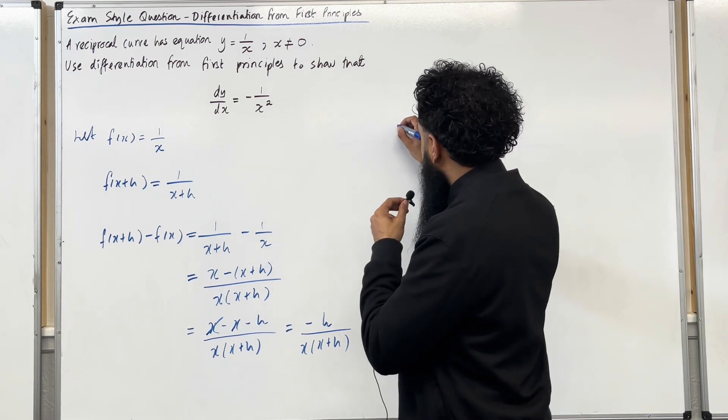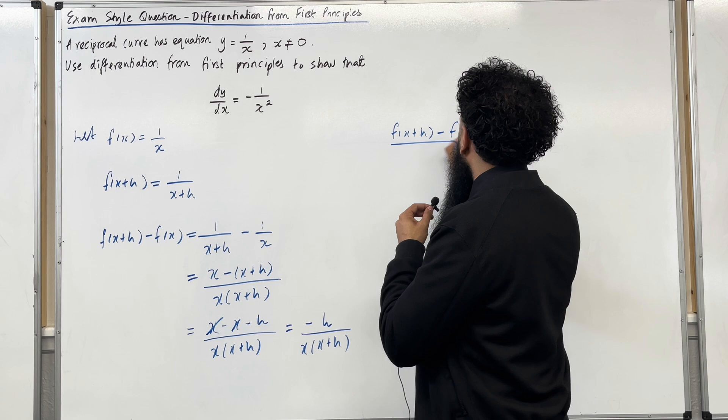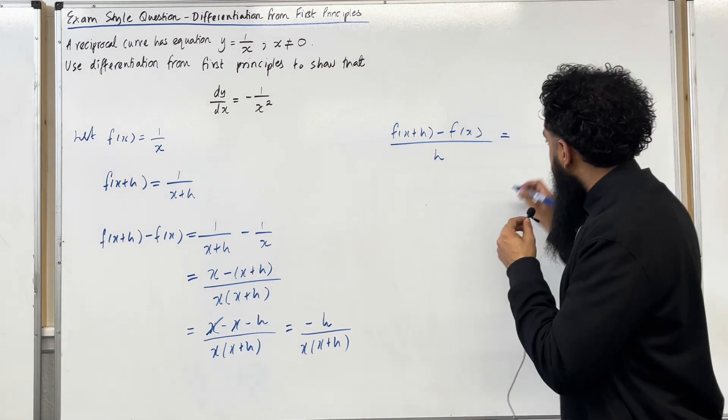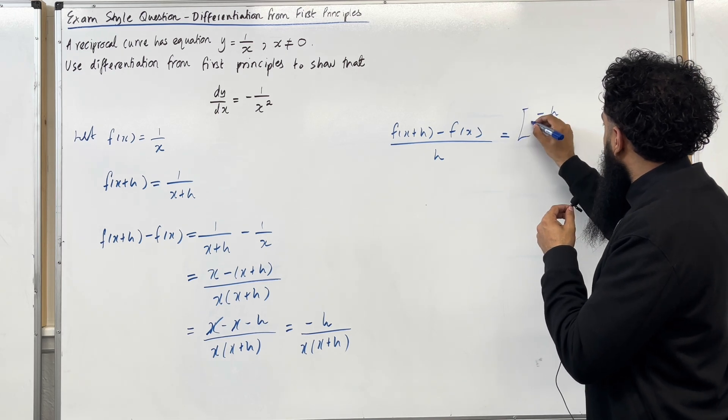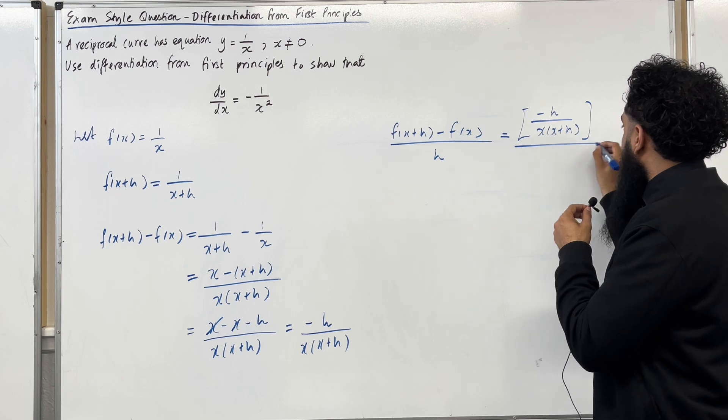The next step is to find f of x plus h minus f of x all over h. So that numerator there is this fraction here. I'm going to divide this by h.